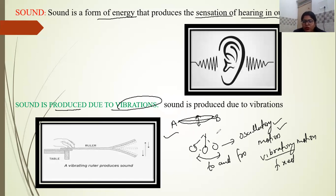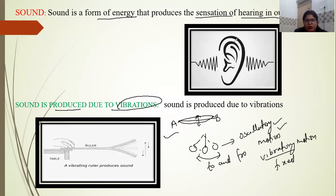Likewise, musical instruments also produce sound through vibration — the vibrating membrane of a drum produces sound, and a vibrating string also produces sound. So many examples are there. Let's see what the sources of sound are.